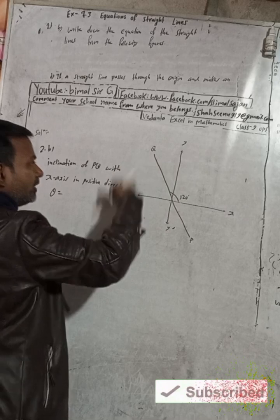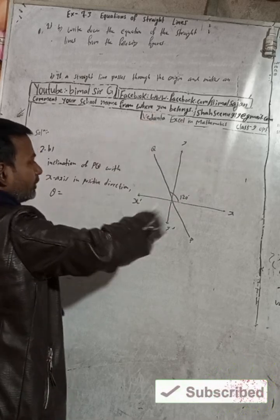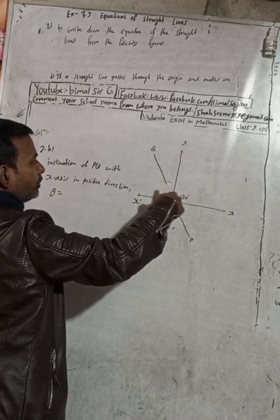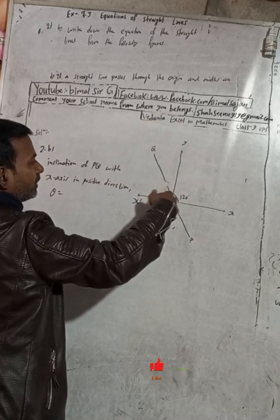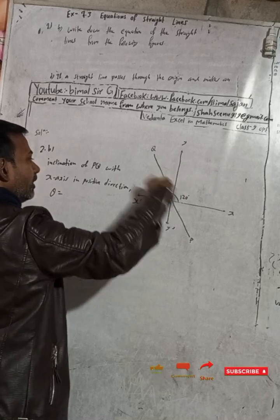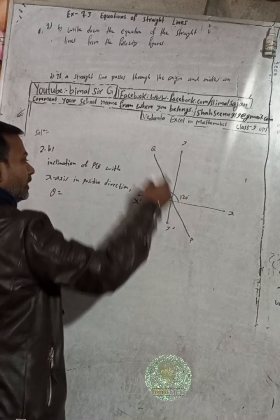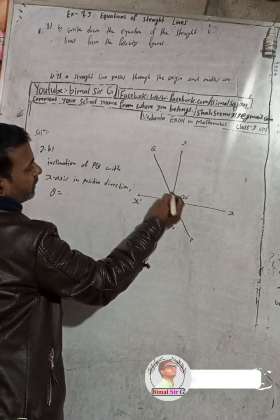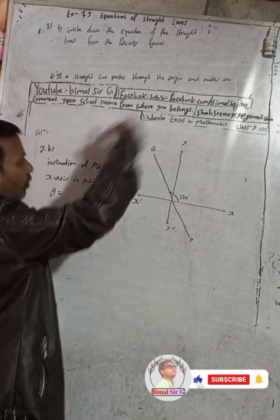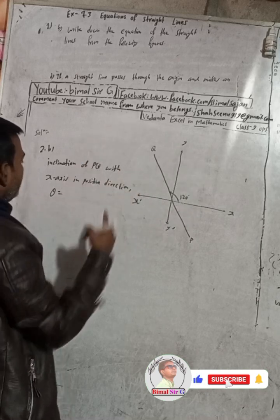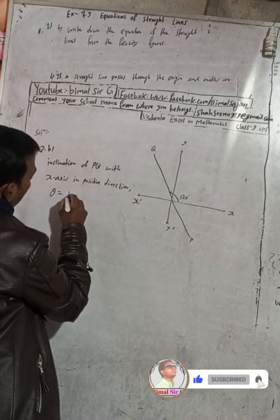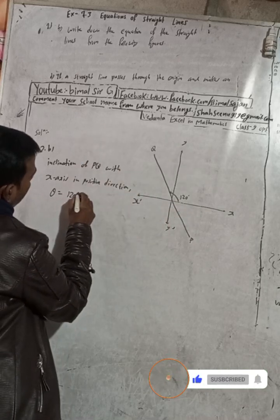Positive direction means the anticlockwise direction. We should take only this direction — this is the positive direction, anticlockwise. So theta is equal to 120 degrees. Now we can write the slope.